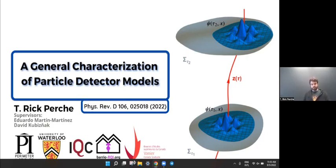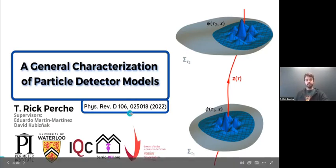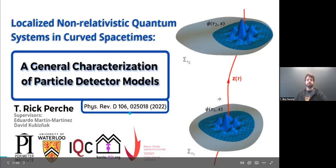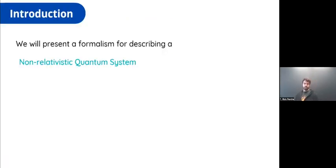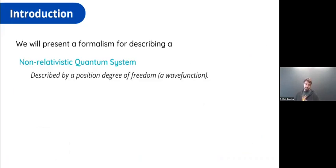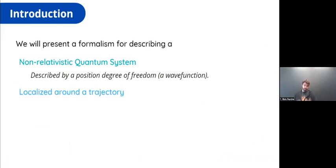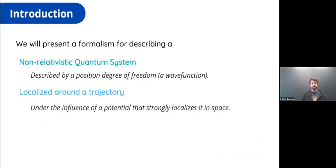The first step in order to get to this general characterization will be to talk about localized non-relativistic quantum systems in curved spacetimes, because the detector is simply this but now coupling with a quantum field. So the first step will be to present a formula for describing this non-relativistic quantum system — a system described by a position degree of freedom, a wave function localized around the trajectory.